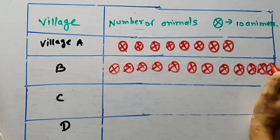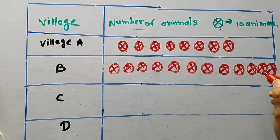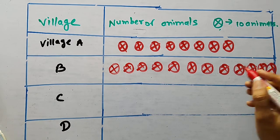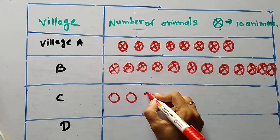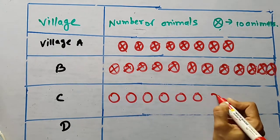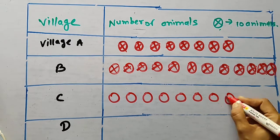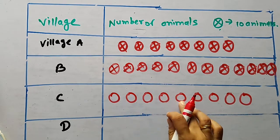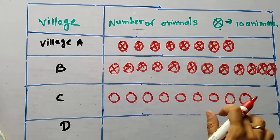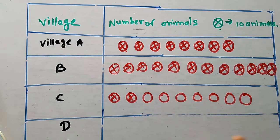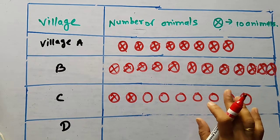In village C, how many? 90. For 90, draw 9 symbols: one, two, three, four, five, six, seven, eight, nine. These are 90. In this way, you have to complete this chart yourself for villages D and E.